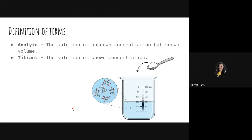Let's define some terms to avoid confusion. First, what is an analyte? The analyte is the solution of unknown concentration. We don't know its concentration, so in a titration, this is what we're looking for — we titrate it to find out this concentration. However, the analyte has a known volume.